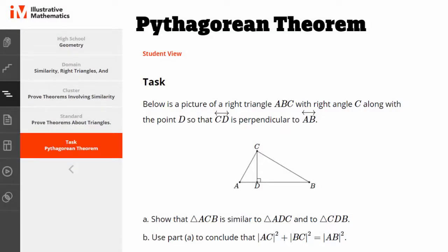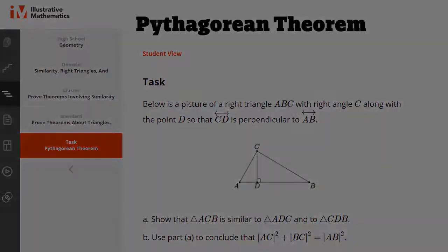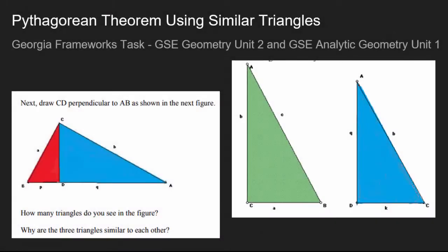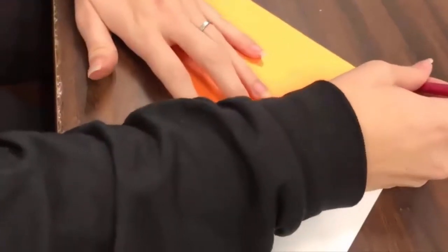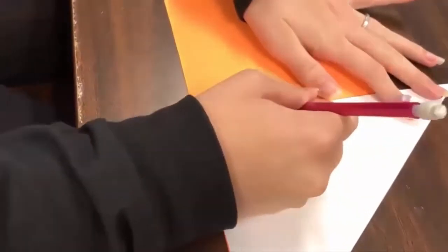Illustrative math features a proof version of the Pythagorean theorem with similar triangles that allows students to take the given facts, grapple with the mathematics, and attack the proof. The Georgia Frameworks features an option of a scaffold approach where students will mentally manipulate parts of similar triangles to see the components that match up in the proof process. A final version would be to actually allow students the hands-on approach of constructing the similar triangles and proving the Pythagorean theorem while actually manipulating the triangles in the process.